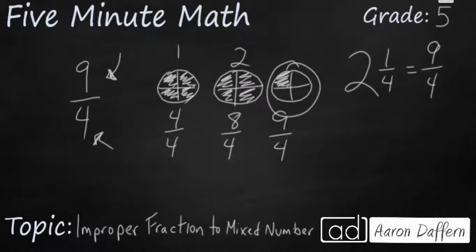But how can we do this without drawing a picture? If you ever needed to do this without drawing a picture, the standard algorithm, or the normal way, is to use division. So take your improper fraction, and what you're going to do is you're going to divide up. You're going to take the 4, and you're going to divide that into the 9. So let's take a look at this.